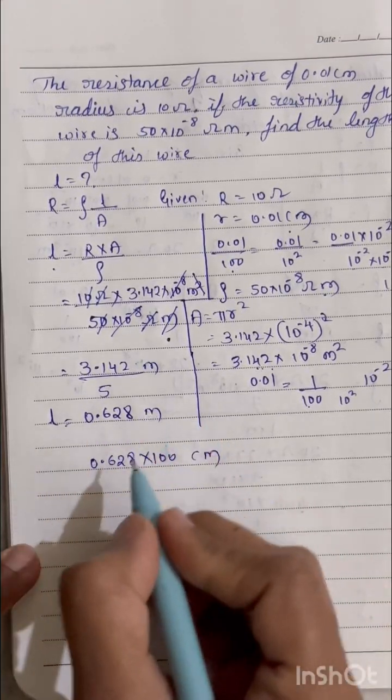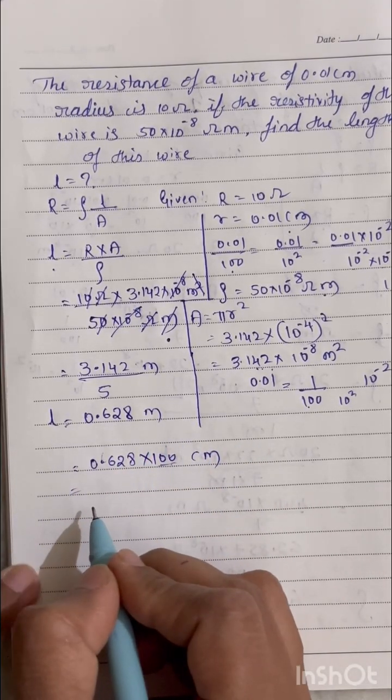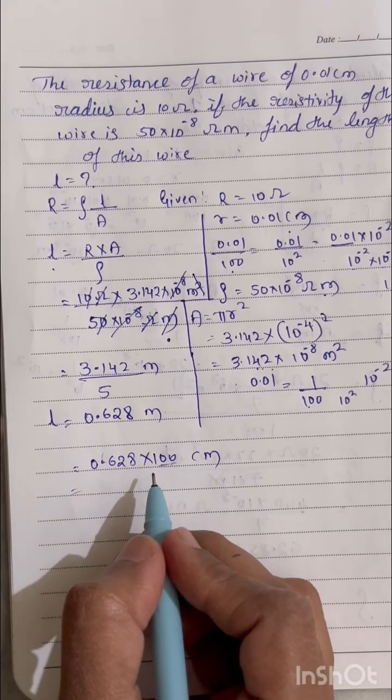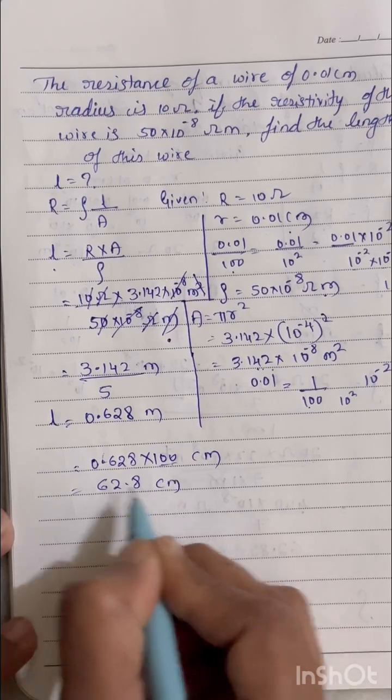Now to convert to centimeter what we will do, we have to multiply it by 100. So we can just write directly here, how many zeros are there, two zeros are there, so shift to the right two decimal places. I'll get 62.8 centimeter length.